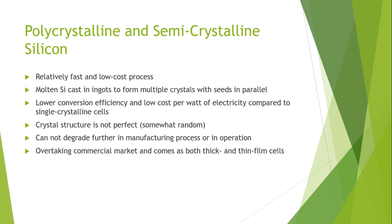Polycrystalline silicon, or multicrystalline silicon, also called polysilicon or poly-Si, is a high-purity polycrystalline form of silicon used as a raw material by the solar photovoltaic and electronics industries. Polysilicon is produced from metallurgical grade silicon by a chemical purification process known as the Siemens process. This process involves distillation of volatile silicon compounds and their decomposition into silicon at higher temperatures.